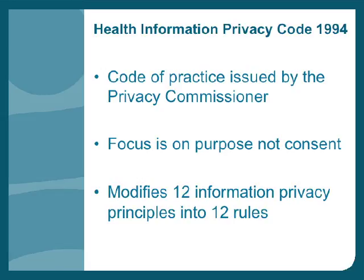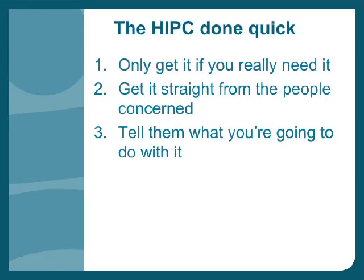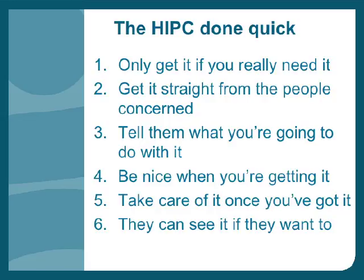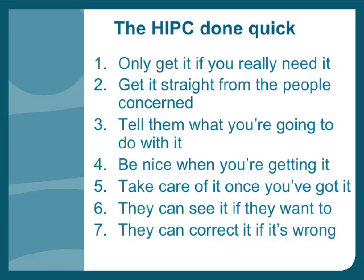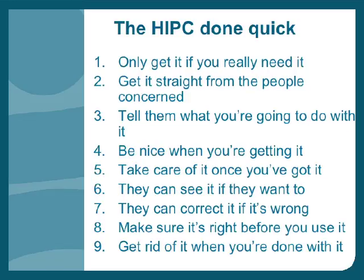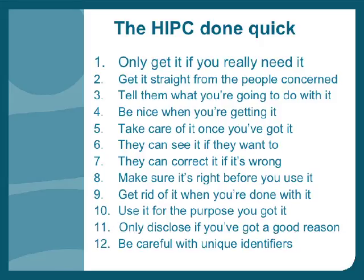In order: Rule 1 says only collect the information you need. Rule 2 says get it from the person concerned. Rule 3 says tell them what you're doing. Rule 4 says be nice when you're doing it. Rule 5 says take care of the information once you've got it. Rule 6 says people have a right to see it if they want to. Rule 7 says they can correct it if they ask you. Rule 8 says make sure it's accurate before you use it. Rule 9 says get rid of it when you're done with it. Rule 10 says only use it for the purpose for which you obtained it. Rule 11 says only disclose it if that's why you obtained it. Rule 12 deals with unique identifiers.